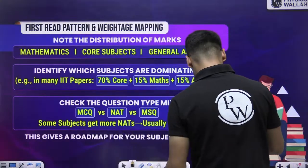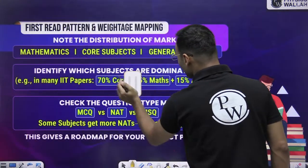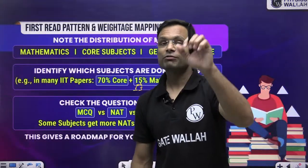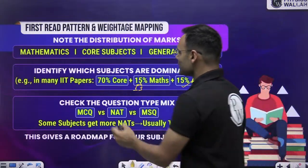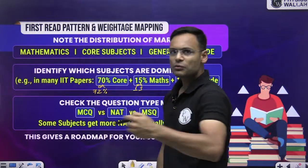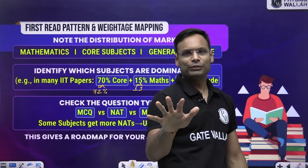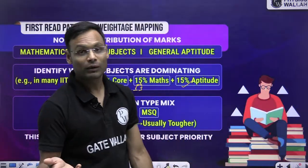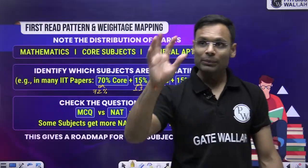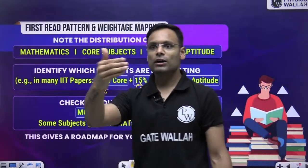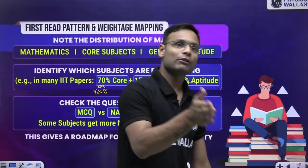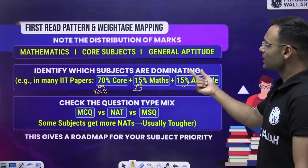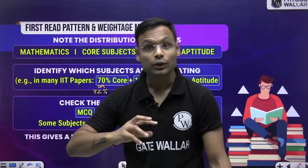You'll get an exact mapping of different topics: aptitude is 15 marks for sure, mathematics is 13 marks in computer science (check your specific branch for the exact math weightage), and the remaining 70–72 marks go to technical courses. This weightage helps you plan — if you're strong in aptitude, you can target 12–13 out of 15; if math is solid, you can target 10–13 out of 13. Then you focus on core courses accordingly.